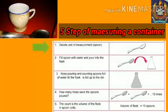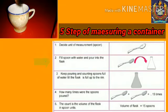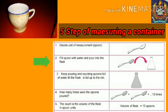The first step is: decide the unit of measurement. In this case we used a spoon to fill the cup. The second step: fill the spoon with water and pour it into the cup. The third step: keep pouring and counting spoons full of water till the cup is full up to the rim.